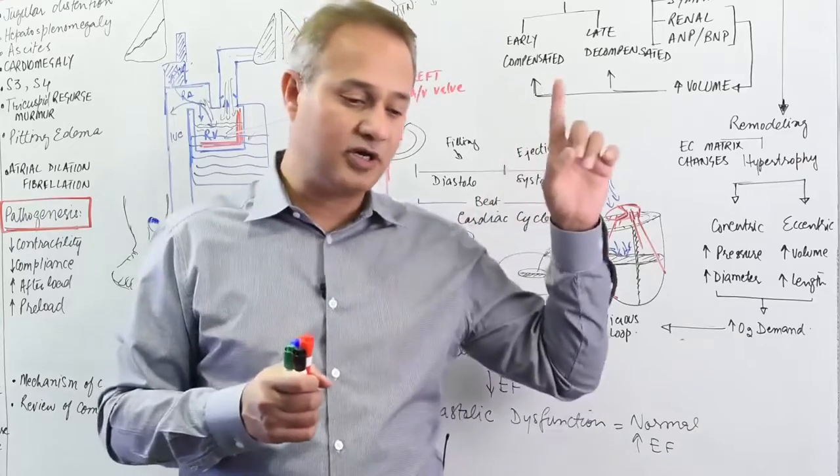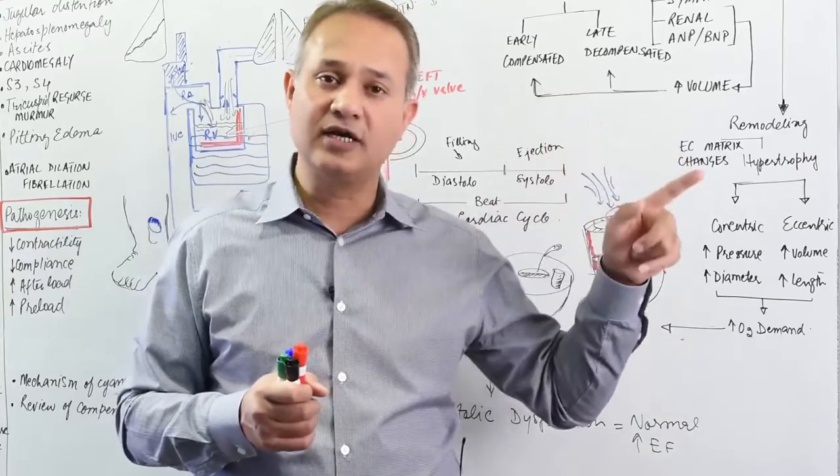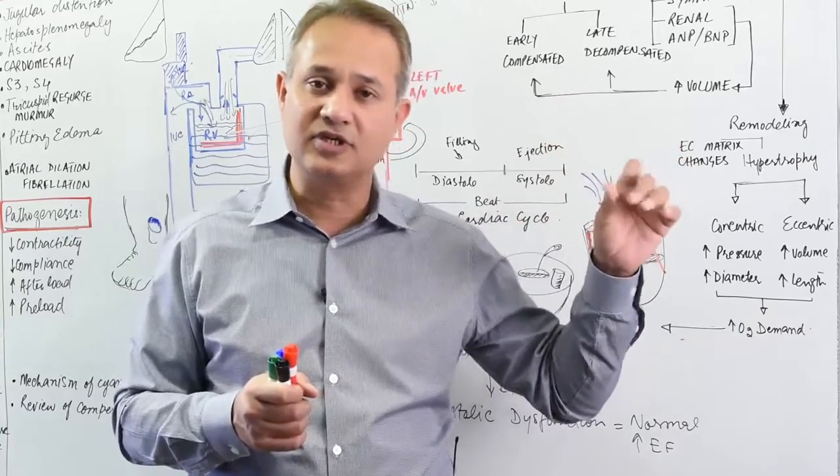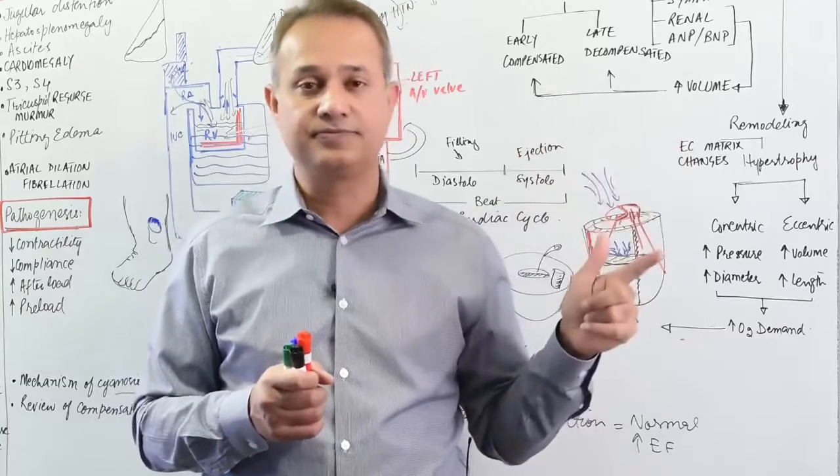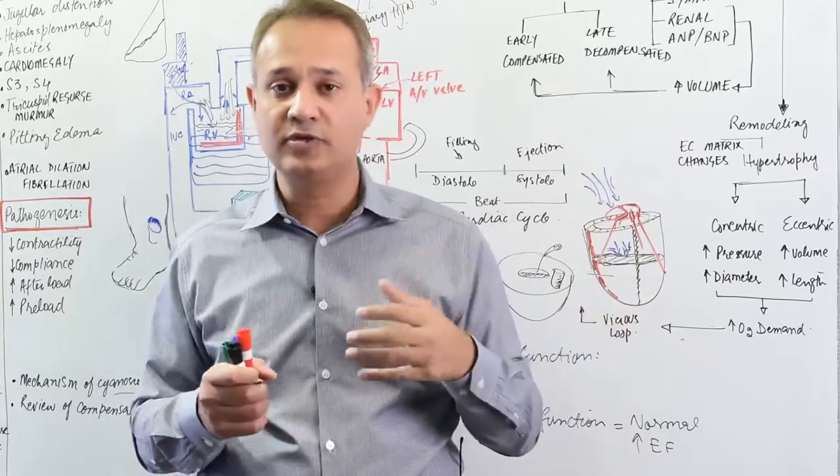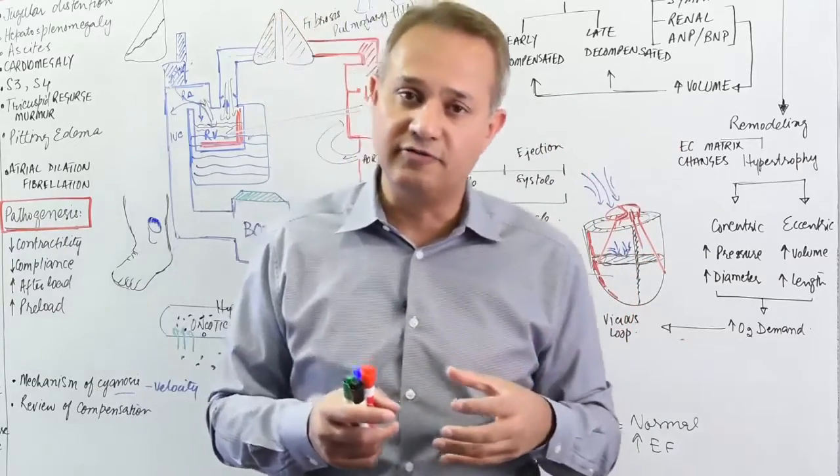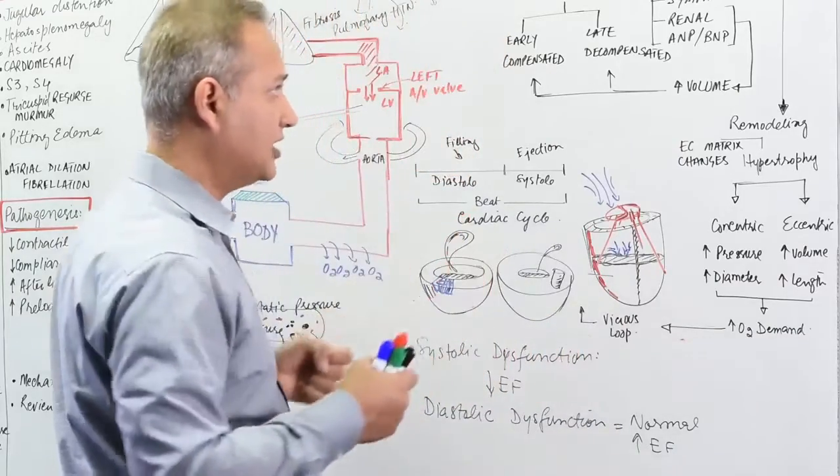Why is it called brain natriuretic peptide? Because it was found in the brains of porcine animals. However, in humans, it's released from the ventricles when they stretch.